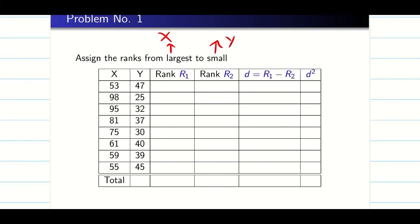It is not always necessary to take R₁ from X because we are going to find d square. Whether you subtract ranks of X with Y or Y with X, it is always going to be positive when you square it.